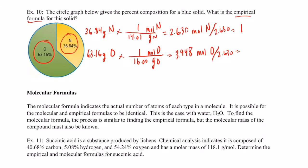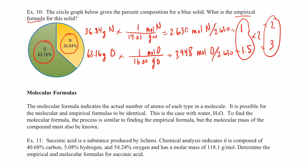So to get whole numbers, we're going to divide by the lowest number of moles — 2.630 in this case. That gives us a 1 for nitrogen, and 3.948 divided by 2.630 gives me 1.5 for oxygen. That's still not a whole number ratio. Don't round 1.5 to 2 — we want to maintain the 1 to 1.5 ratio. If we multiply both by 2, that gives us a 2 to 3 ratio, which are whole numbers. So the formula is N₂O₃ — dinitrogen trioxide.